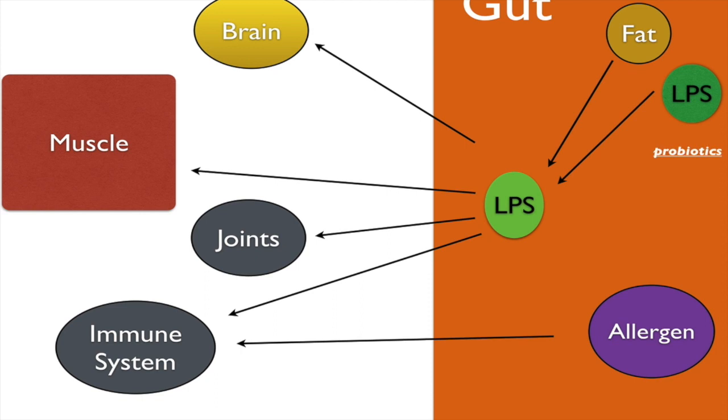We're also going to have an issue where we use probiotics to change the amount of bacterias to decrease the LPS phenomena as well. We can also use glutamine, which is going to block the ability for LPS to get into the system. We're going to use enzymes because certainly food allergies can play a role.